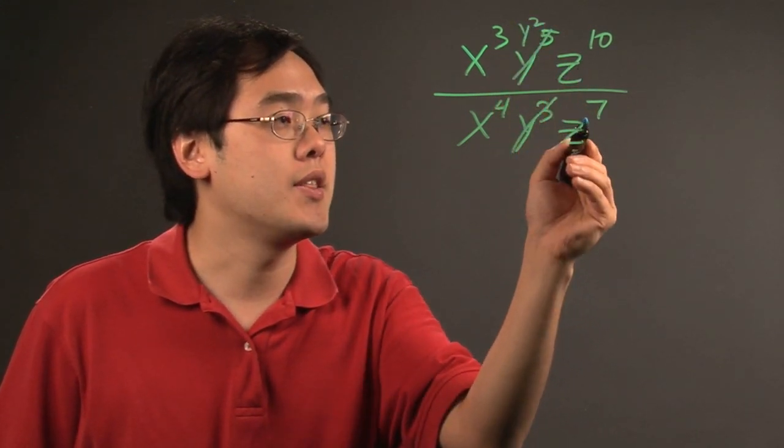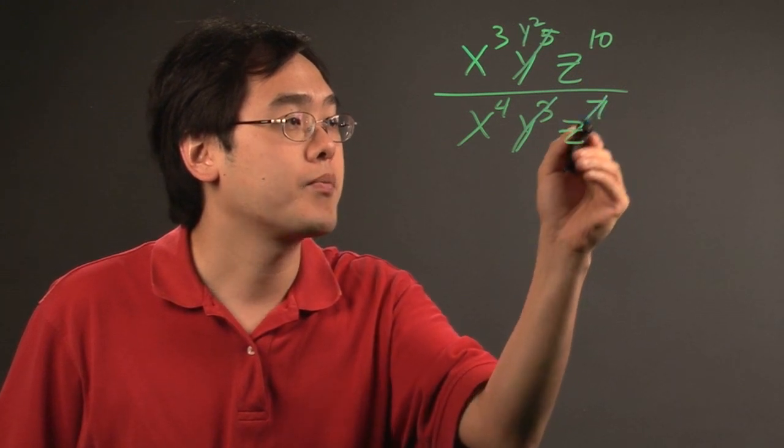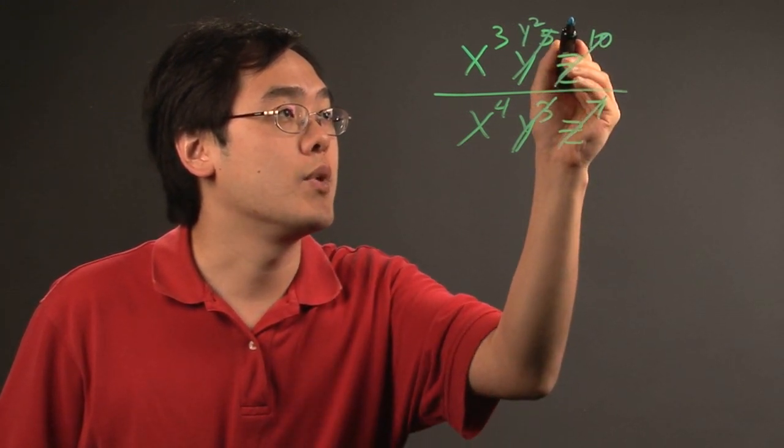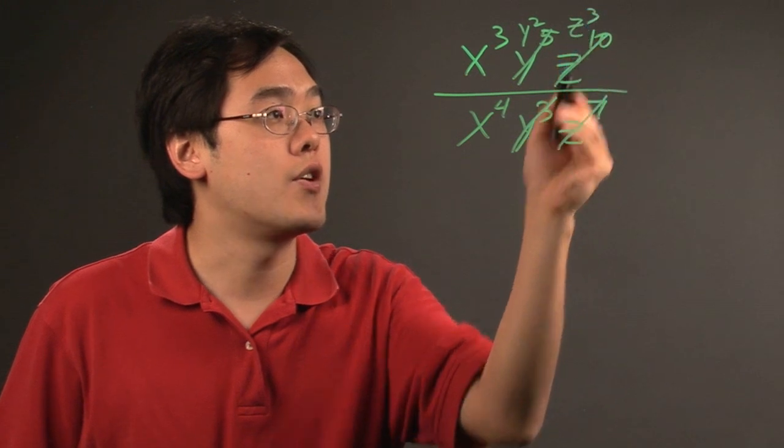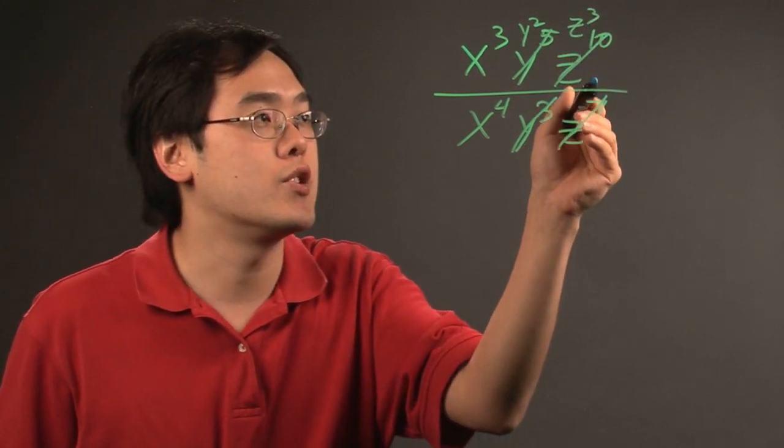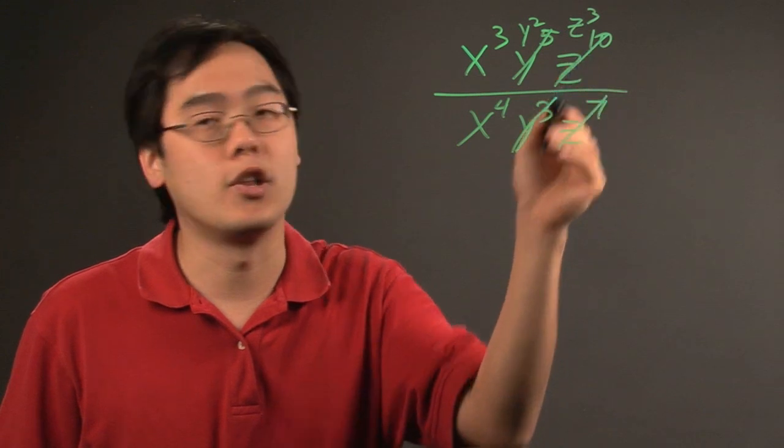And then z to the tenth and z to the seventh, same idea. They cancel out and you're left with z to the third. Now, what you're basically doing is you're subtracting the smaller from the larger.